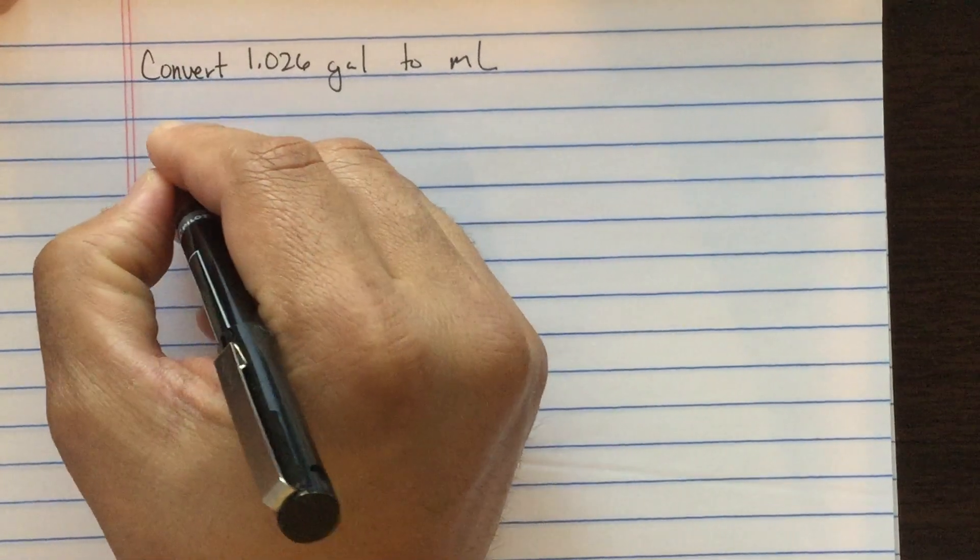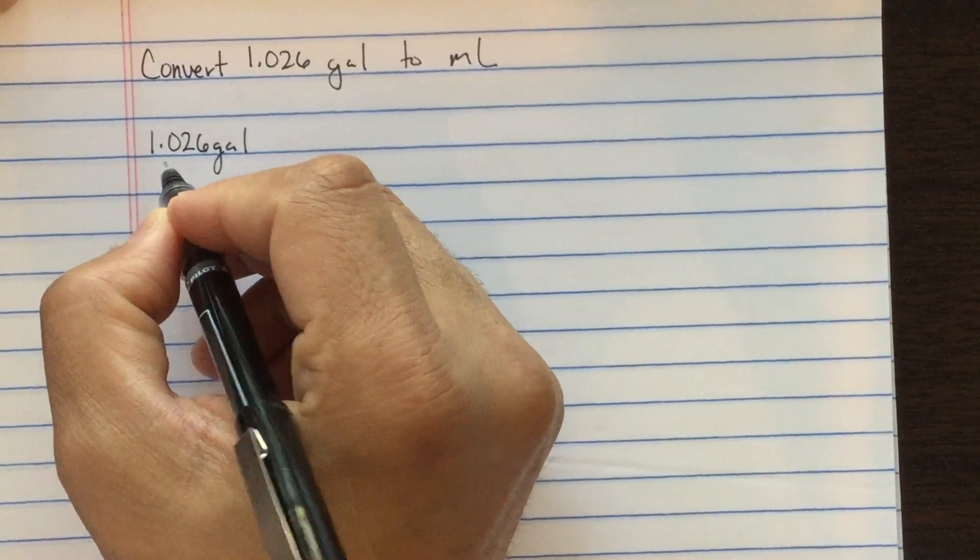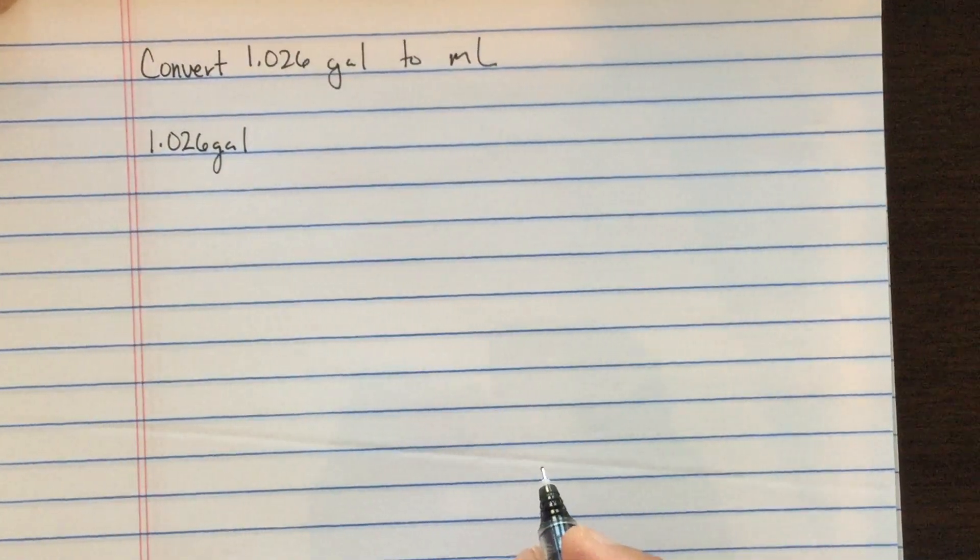We'll start with 1.026 gallons. We're starting with four significant figures - that's a captive zero so that's significant, and so our answer should have four significant figures.